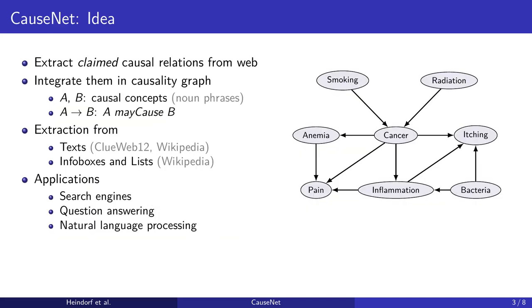We would like to construct this graph by extracting causal relations from the web and integrating them in a causality graph. In this graph, nodes represent causal concepts, i.e. noun phrases.